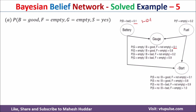Similarly, we write the conditional probabilities for start: the probability of start being no, and the probability of start being yes. Again there are four conditions, because start depends on both battery and fuel. These are the probabilities given to us.